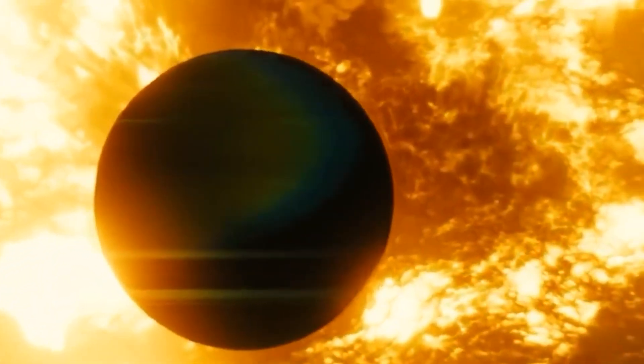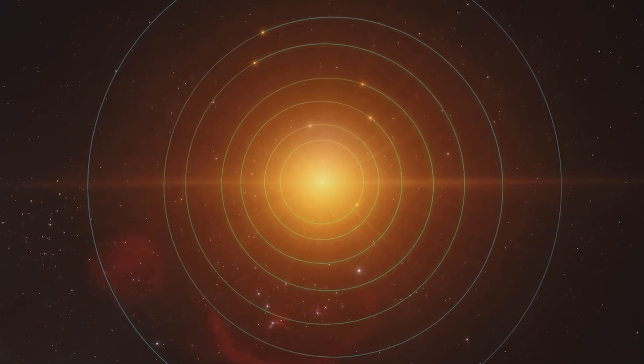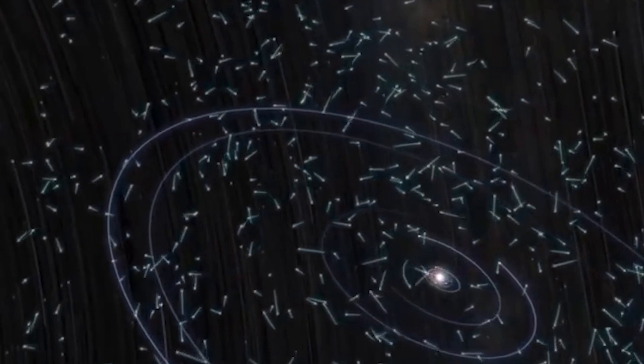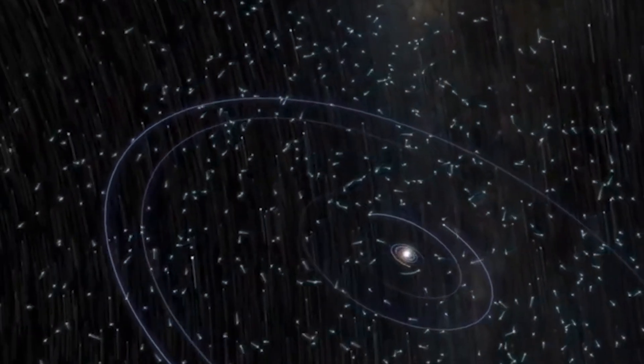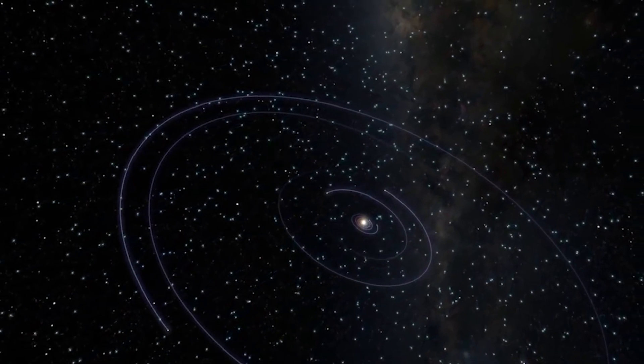So, why is our solar system unique? Well, it all boils down to the molecular cloud that birthed it. Each star system has its distinct history, making the chance of having a solar-like structure exceptionally low. In fact, very few end up resembling our solar system.